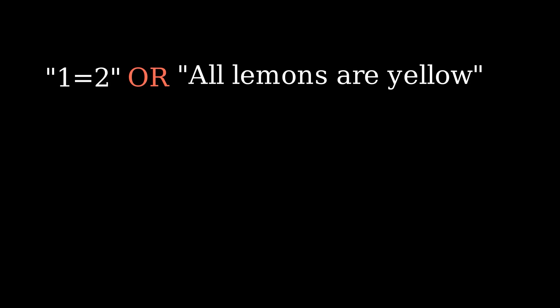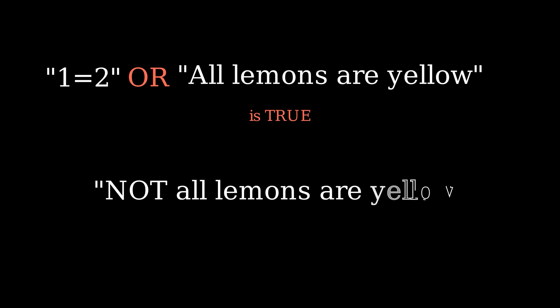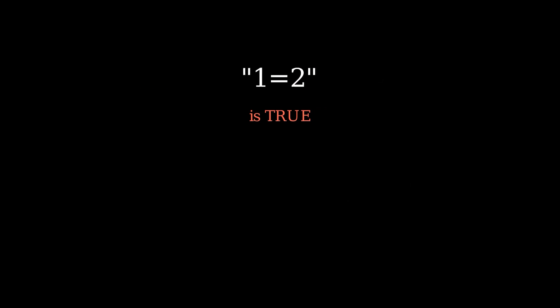Assume, for example, that you proved that all lemons are yellow, and you also proved that not all lemons are yellow, and you want to prove from there that one is equal to two. Consider the proposition: 'one is equal to two, OR all lemons are yellow.' Since the second part is true, the whole proposition must be true. Now pair this with the proposition 'not all lemons are yellow.' Since the first proposition is true but not all lemons are yellow, we deduce that one must equal two — because that's the only remaining way for the first proposition to be true. And of course you can substitute 'one equals two' with whatever you want.